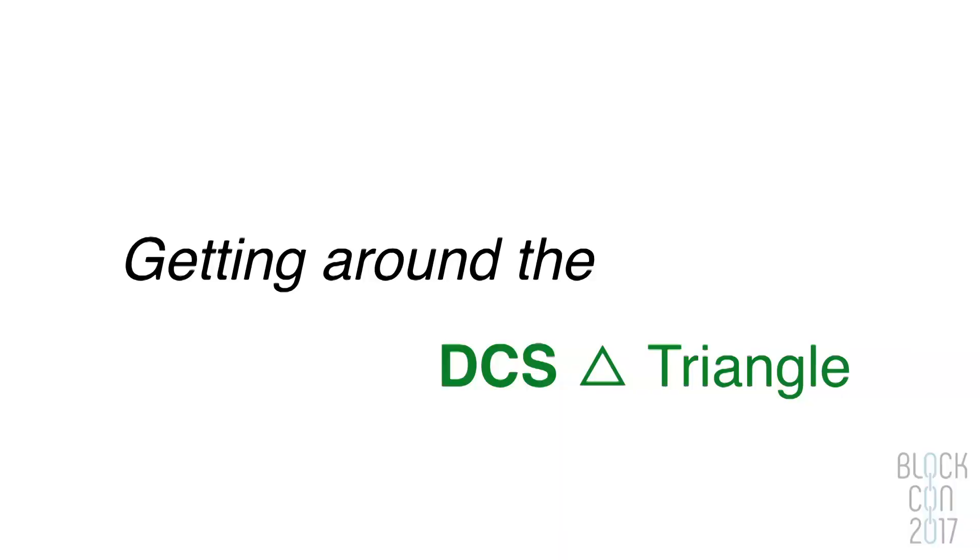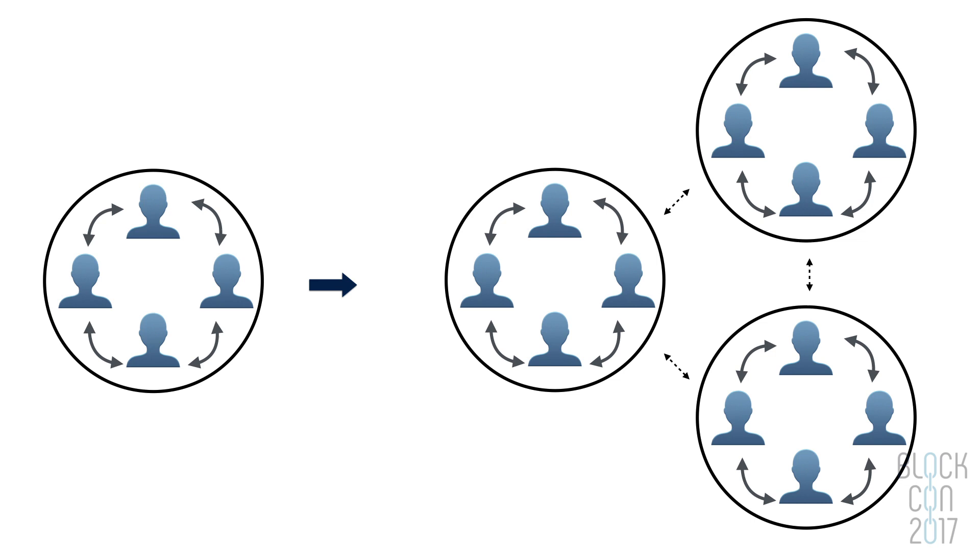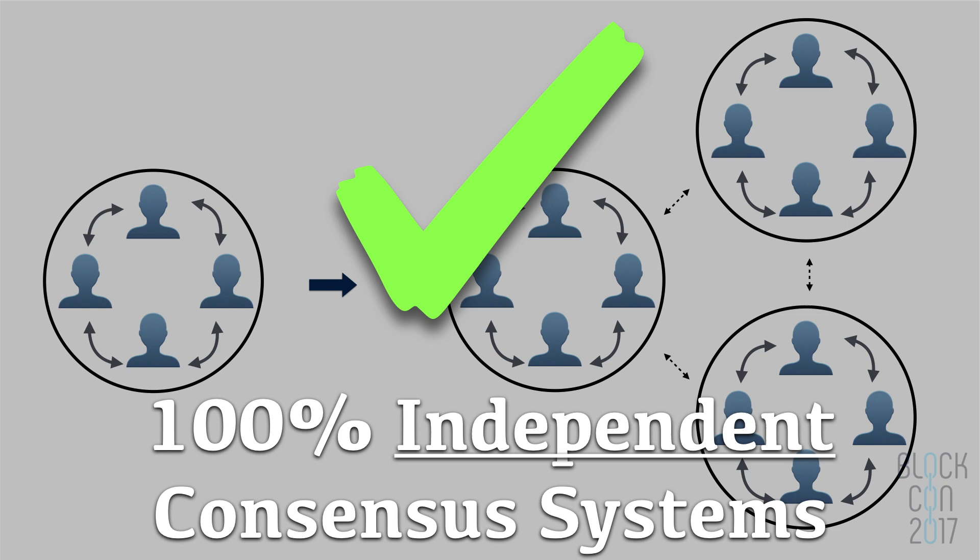So how do you get around the DCS triangle? Getting around it involves deciding to give up control — deciding you are not going to try to conquer the world and voluntarily giving some of your power to other people. This way you can design a nice system like the internet, which has benefited mankind. Instead of doing unrestricted growth like cancer, which undoubtedly leads to centralization, you release some code and let anyone who wants to run their own consensus system do so. Maybe some of these consensus systems can talk to each other in a completely decentralized way — 100% independent consensus systems. That scales.